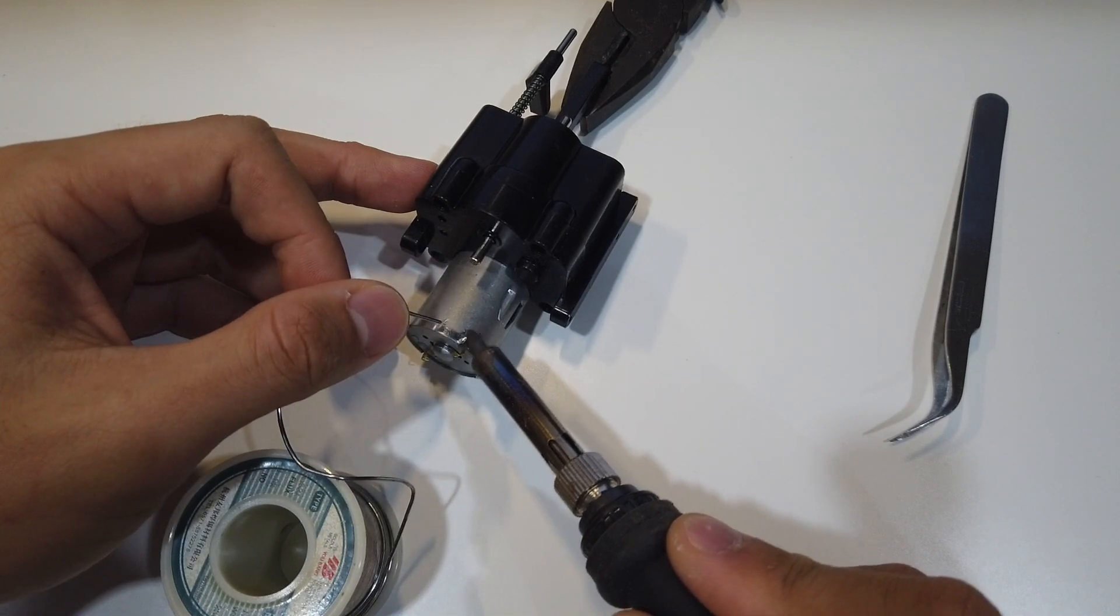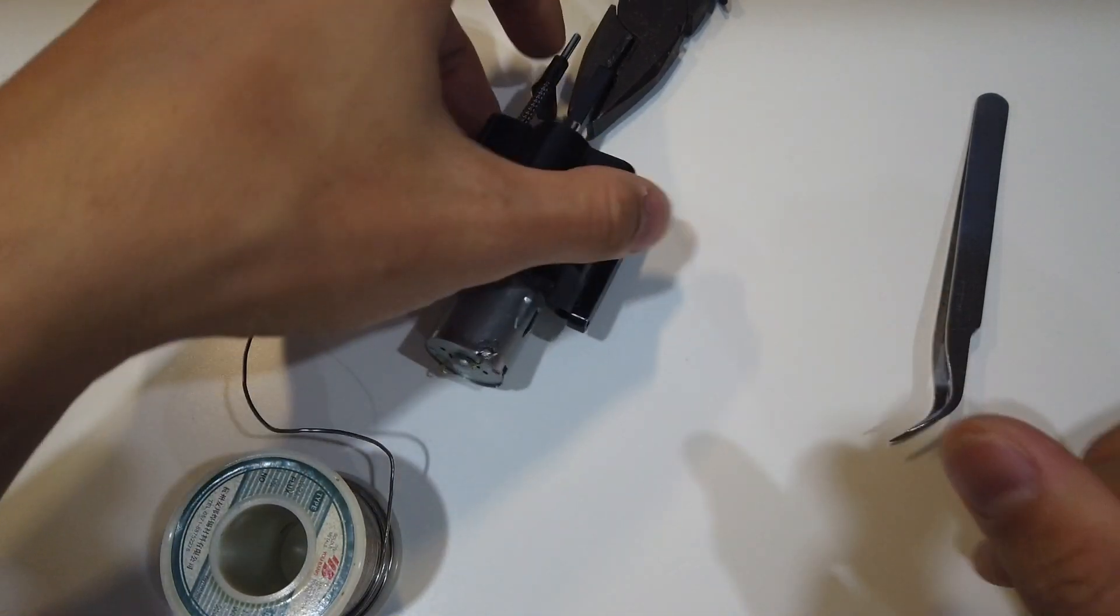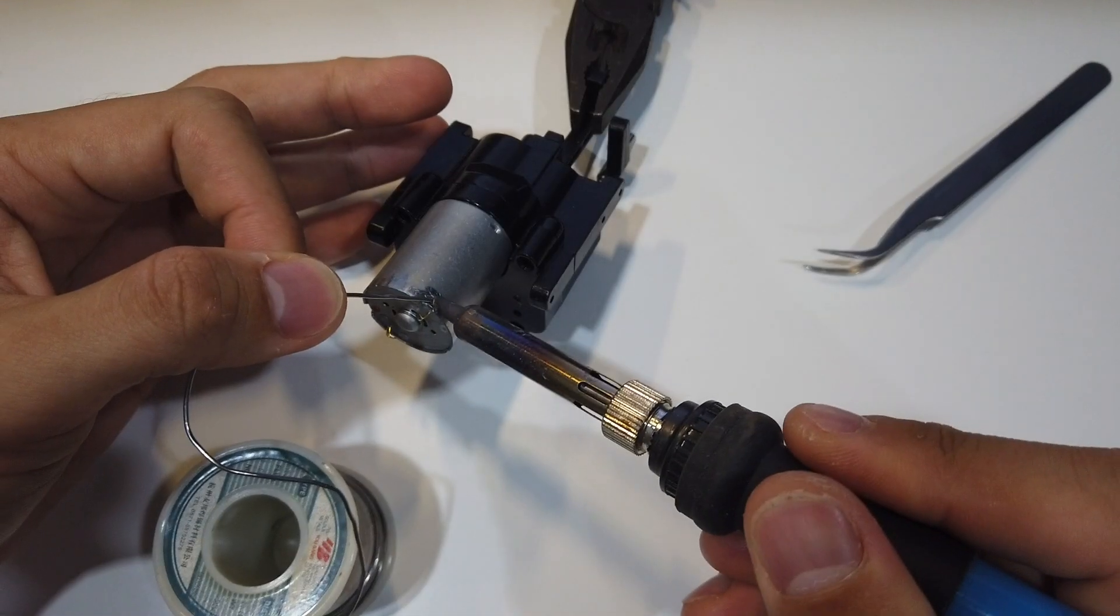So if your solder doesn't stick, you can add a bit of thermal flux. As you can see, it sticks easily. Now the other side.